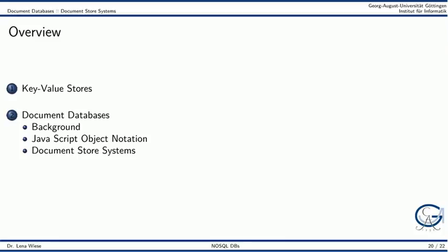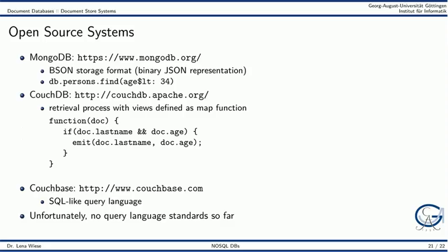We will now look at just a few document database systems. The MongoDB system uses a binary JSON representation. It offers a JavaScript-like API. CouchDB relies on the MapReduce ideas to define access views. That is, we explicitly have to program functions that emit our final results. In the shown example the result consists of key-value pairs where the last name is the key and the age is the value. The CouchBase document database offers a SQL-like query language. As we can see from just these few examples, unfortunately there are no standard query languages for document databases so far.